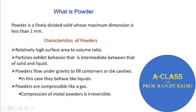A powder should have a relatively high surface area to volume ratio. Powder particles exhibit behavior that is intermediate between that of a solid and a liquid. For example, powders flow under gravity to fill containers or die cavities, and in this case they behave like liquids because they are flowing and can go to different places inside a mold.